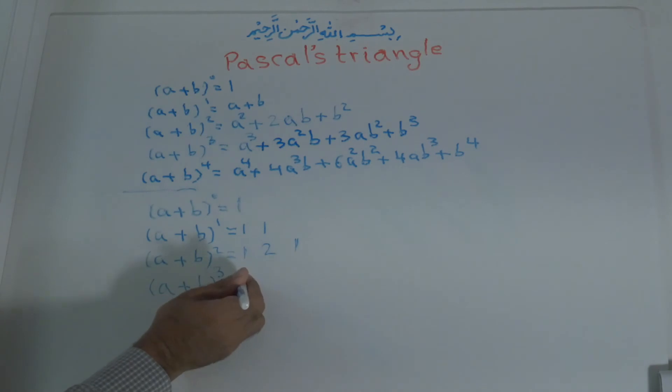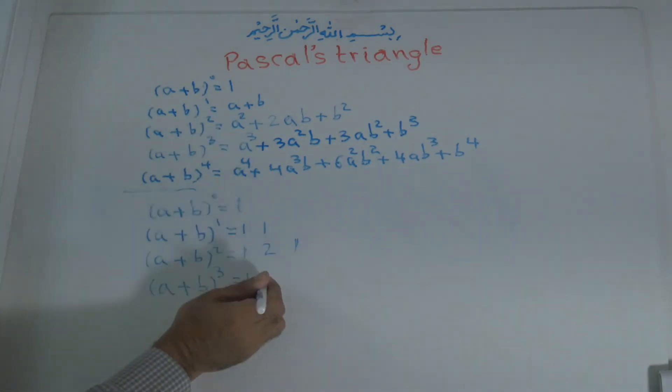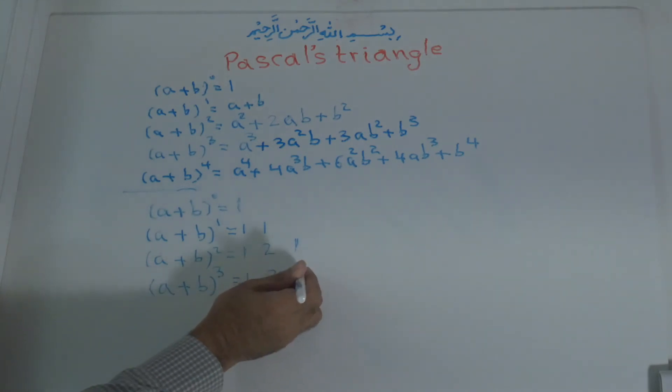For A plus B to the power of 3, it becomes 1, 3, 3, and 1. For A plus B to the power of 4, it becomes 1, 4, 6, 4, 1.